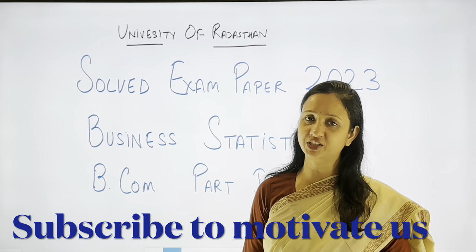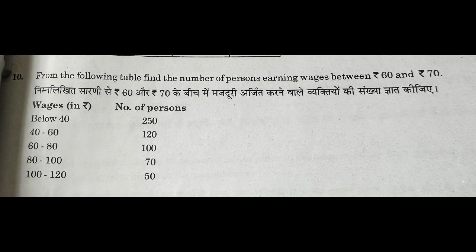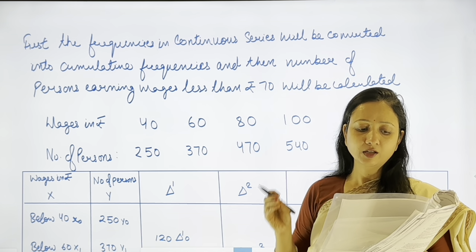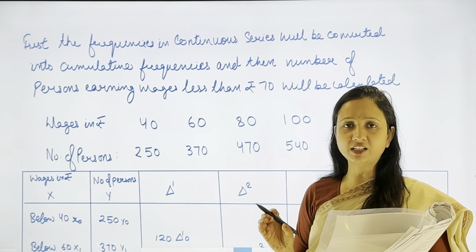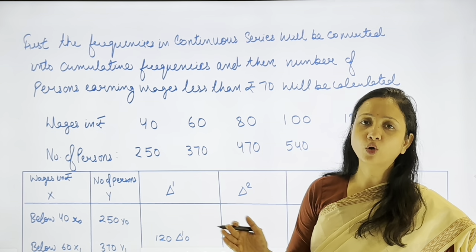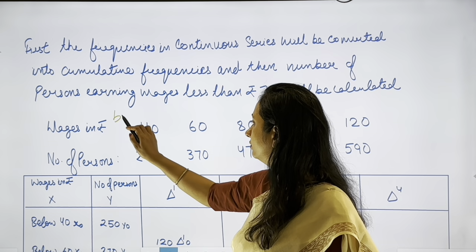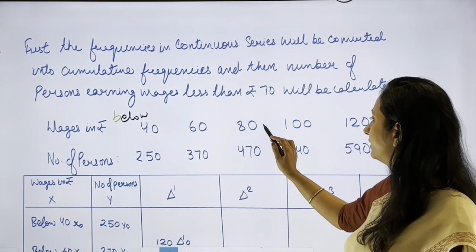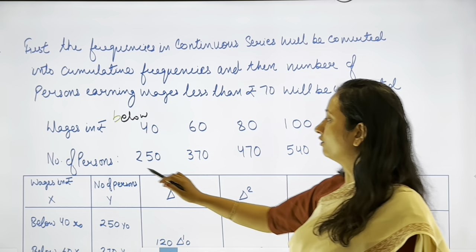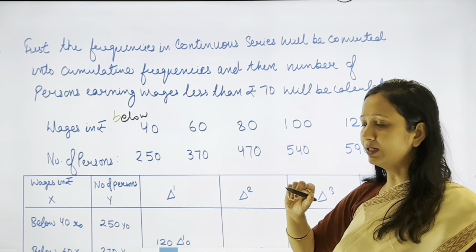Unit 5's last practical question is on interpolation and extrapolation: find the number of persons earning wages between Rs.60 and Rs.70. Wages groups given: below 40, 40–60, 60–80, 80–100, 100–120, with frequencies 250, 120, 100, 70, 50. Converting to cumulative frequencies: below 40=250, below 60=370, below 80=470, below 100=540, below 120=590.